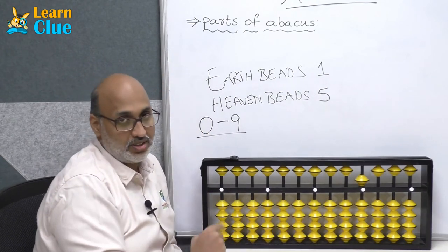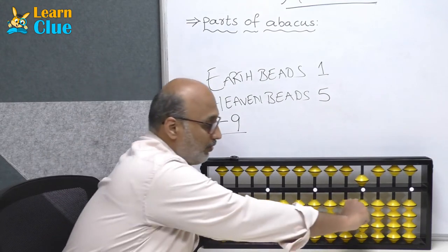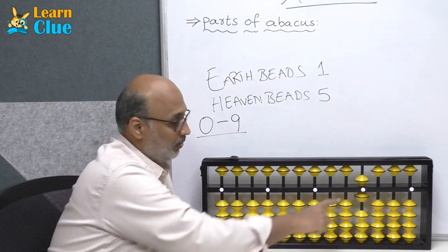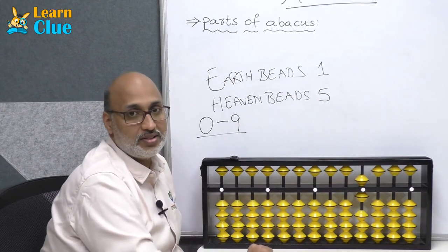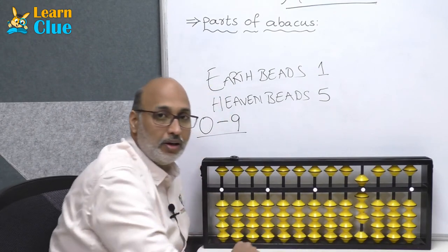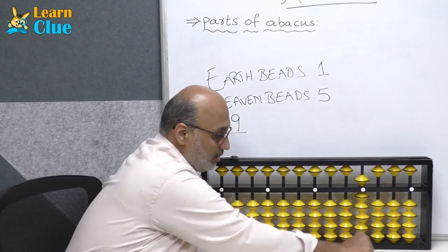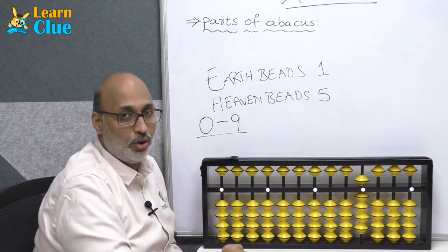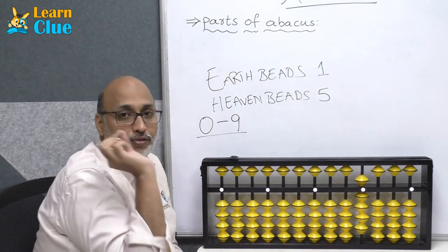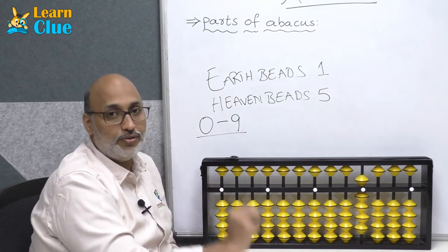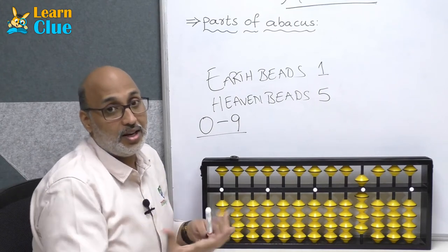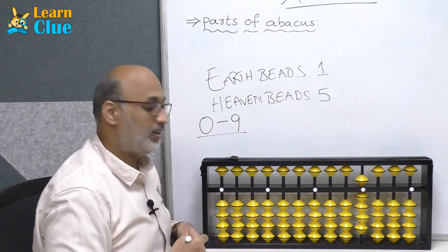After reaching 5, how do we go to the next number — 6? If I touch one earth bead to the unit bar alongside the heaven bead, it becomes 5 plus 1 = 6. Adding one more bead makes 5 plus 2 = 7, then 8, then 9. So in one unit's place, we can count up to 9. For the number 10, a different approach is needed.